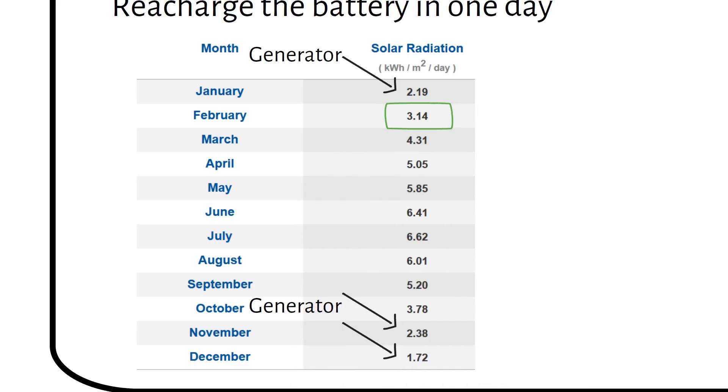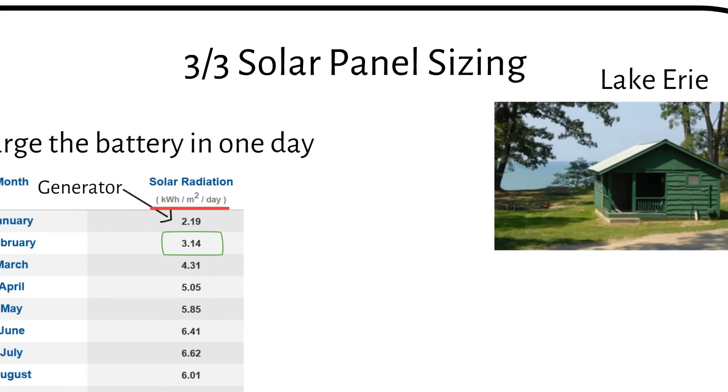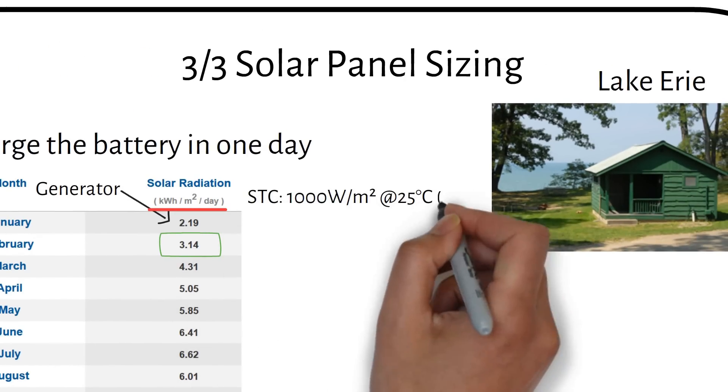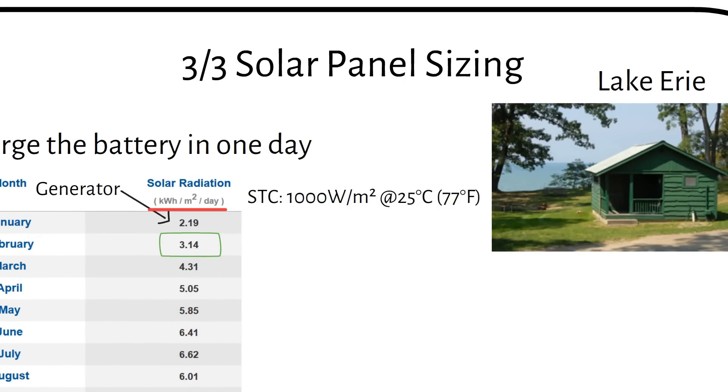We will base our calculation on 3 sun hours. Sun hours is a measurement of the amount of kilowatt hours per square meter per day. Your solar panels are rated at STC or standard test conditions at an irradiance of 1000 watts per square meter. So we can use this to do our calculation without having to use an efficiency factor. All these numbers are monthly averages.